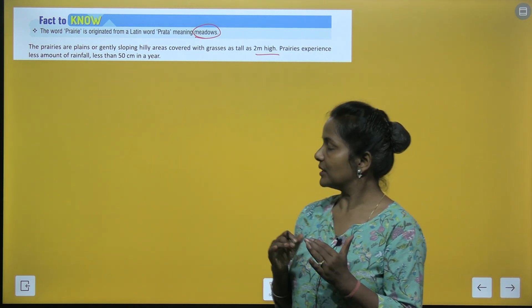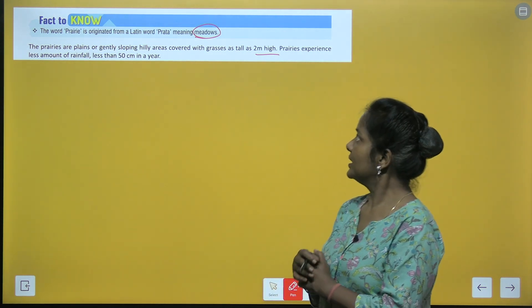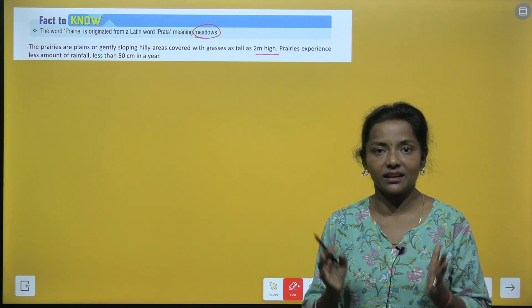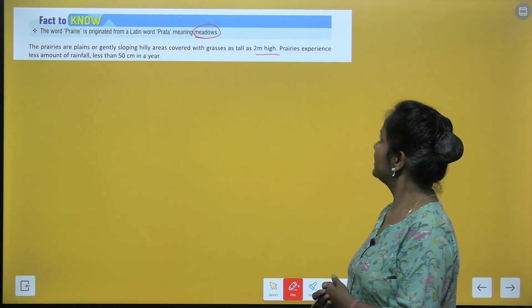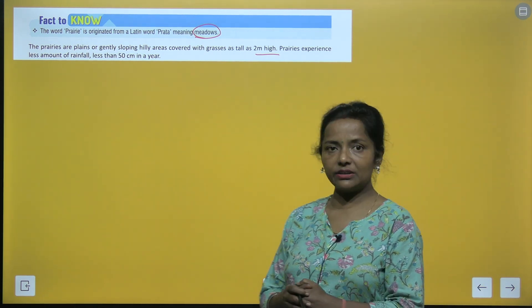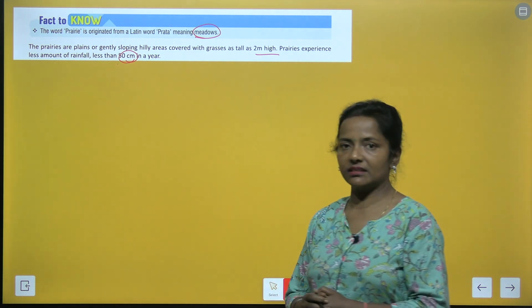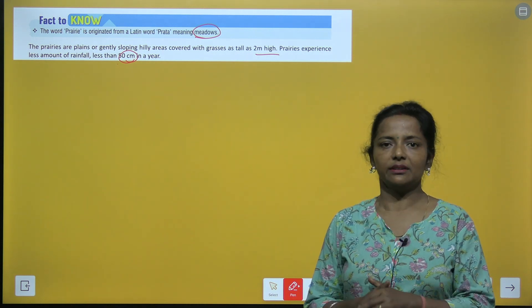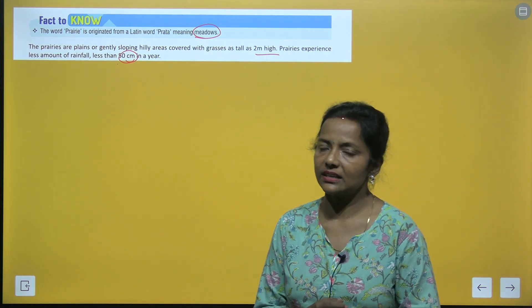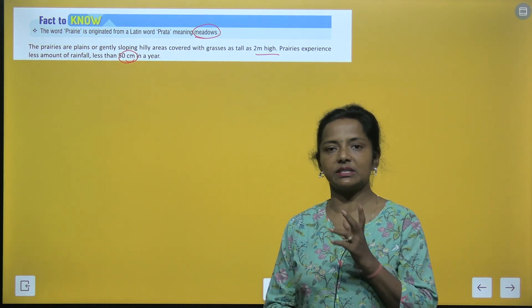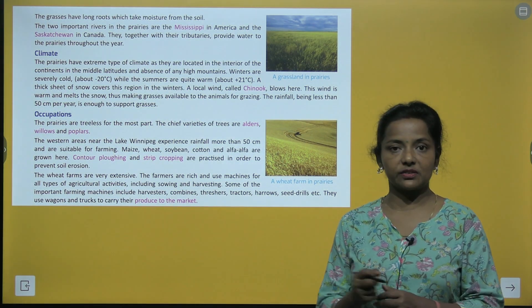Prairies plains hoti hain ya halki slopey hilly areas hoti hain jo covered hoti hain grass se, aur woh grass ki height hoti hai 2 meter high. But prairies experience less rainfall — less than 50 centimeters in a year. The grasses have long roots which take moisture from the soil.